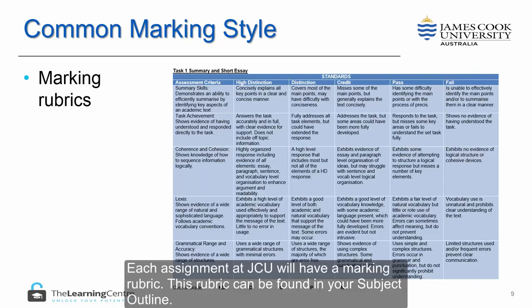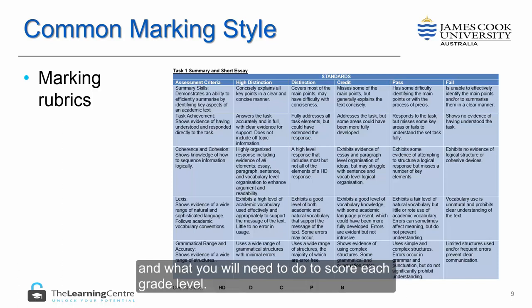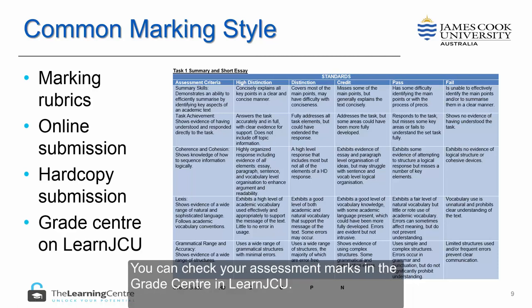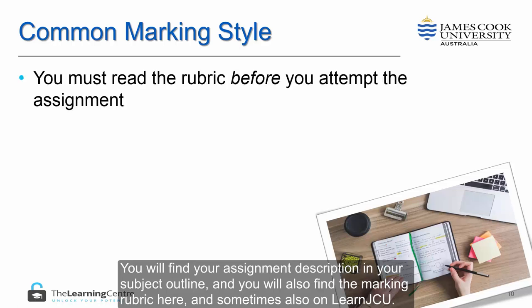Each assignment at JCU will have a marking rubric. This rubric can be found in your subject outline. The marking rubric tells you exactly what each assessment criteria you will be marked on and what you will need to do to score each grade level. You will also find that some assignments require hard copy submission and some will need to be submitted online. You can check your assessment marks in the Grade Centre in LearnJCU. You will find your assignment description in your subject outline and sometimes also on LearnJCU.